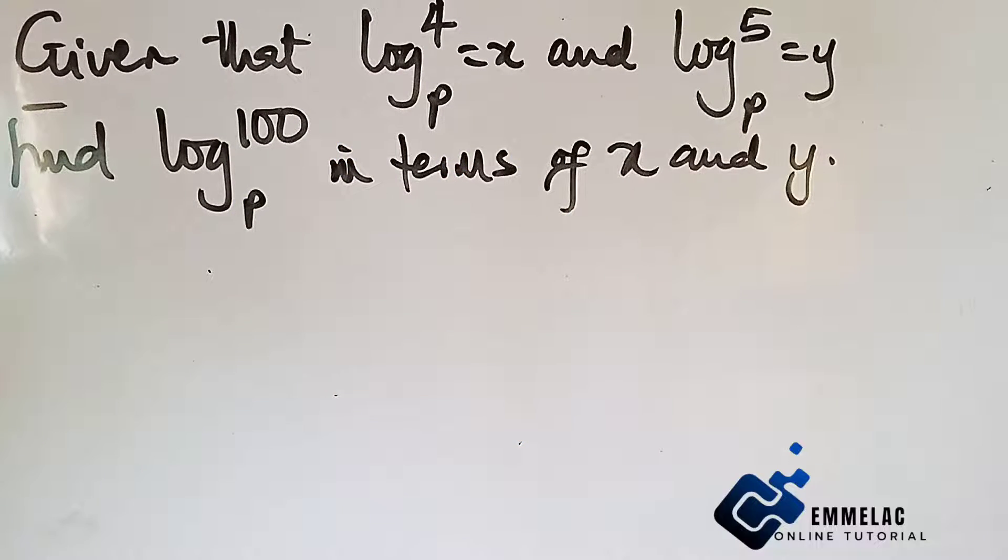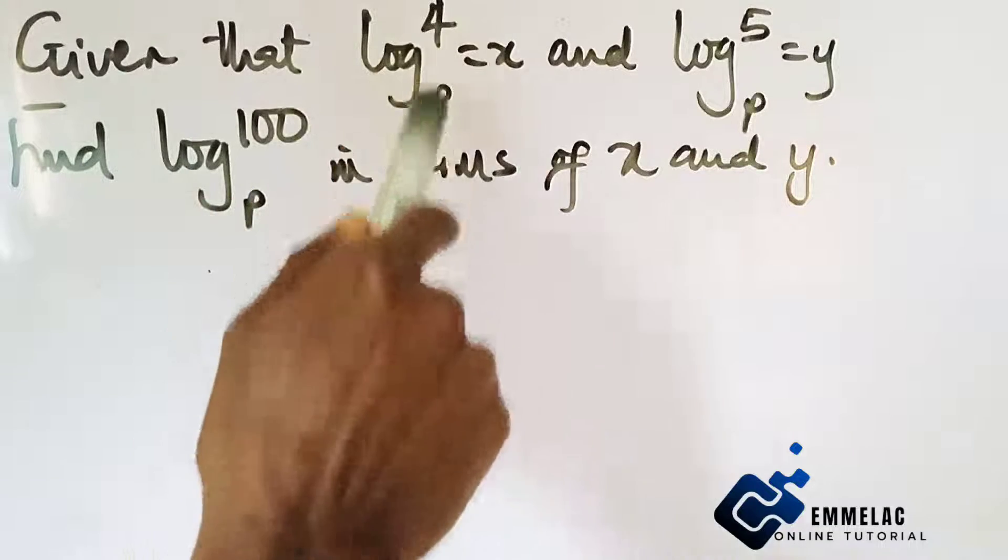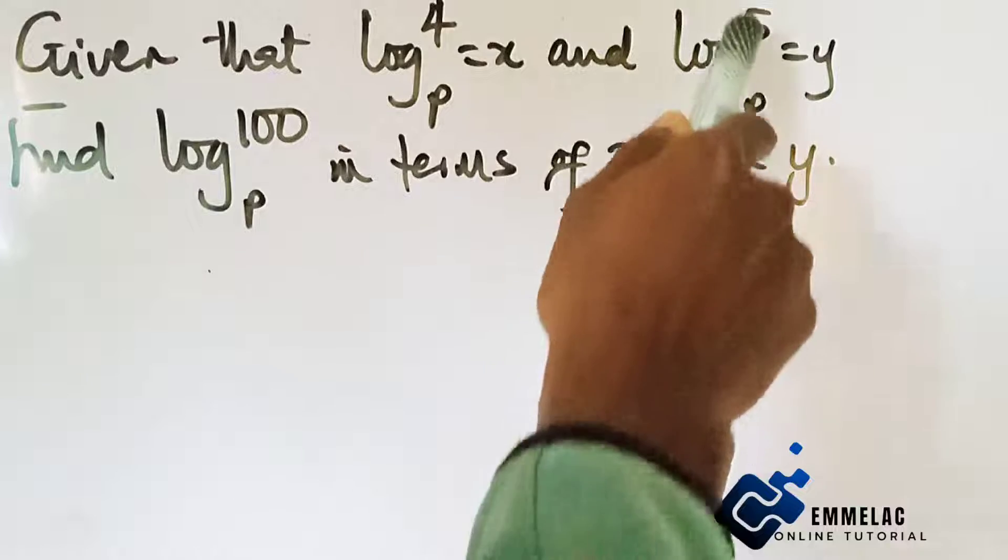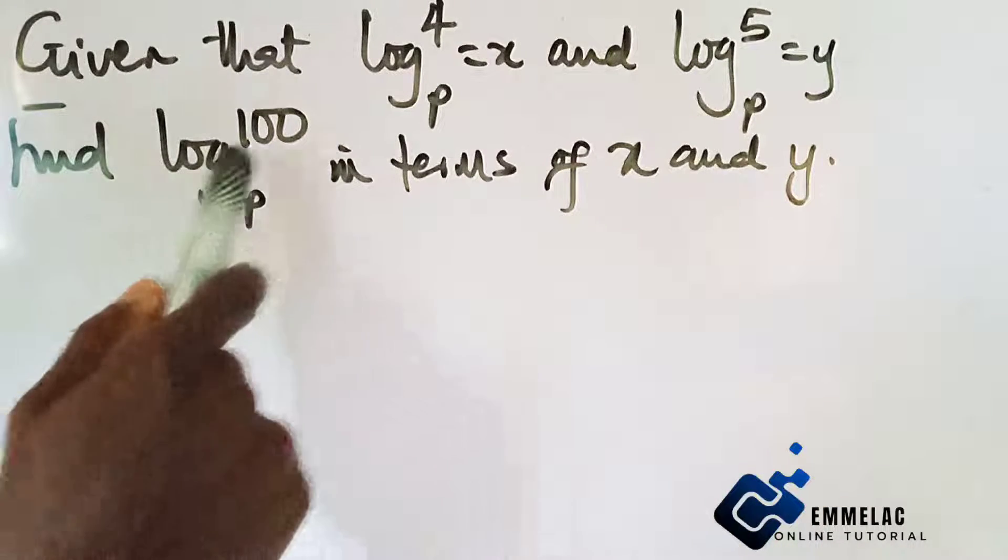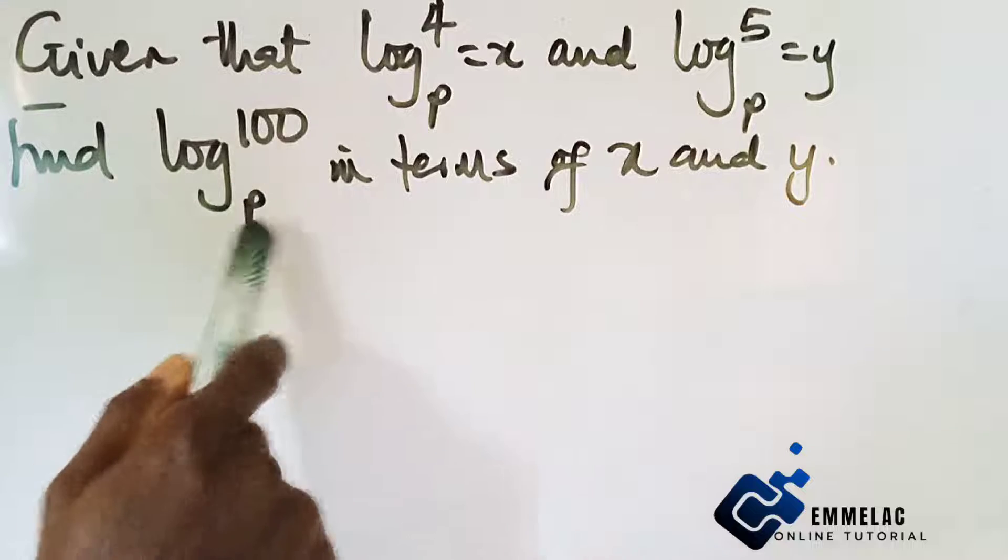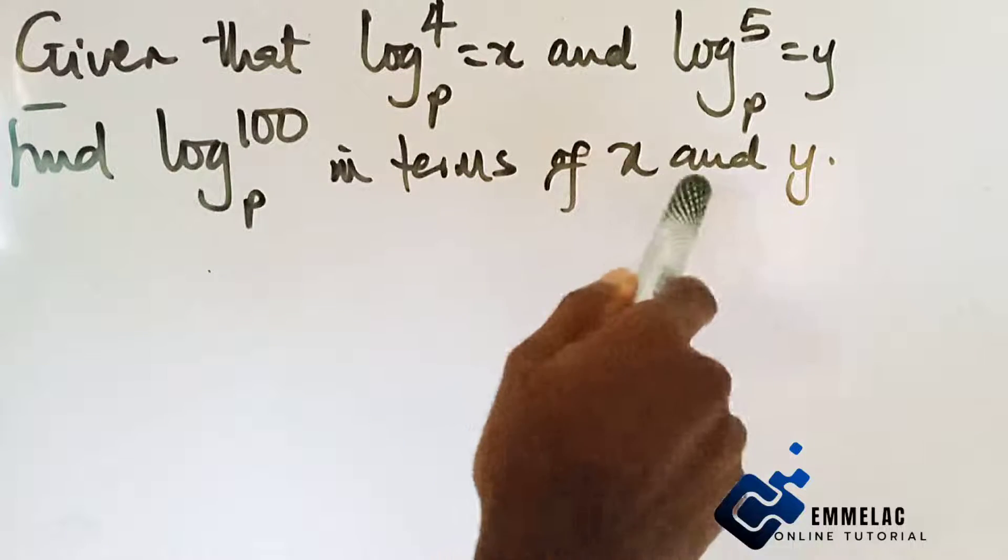Welcome to Emilek online tutorial. In today's class under simple logarithm equations, we have a question that says: given that log base p of 4 equals x and log base p of 5 equals y, find log base p of 100 in terms of x and y.